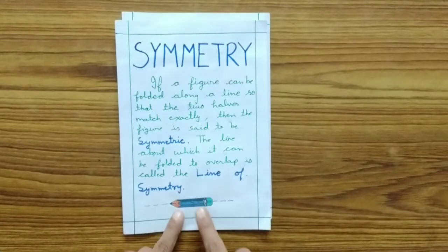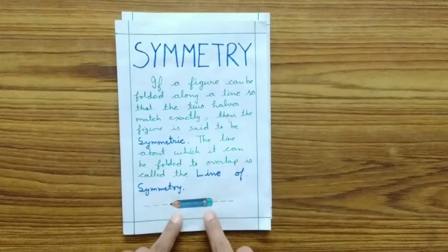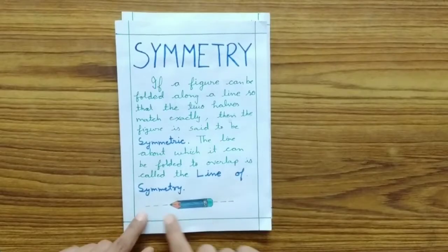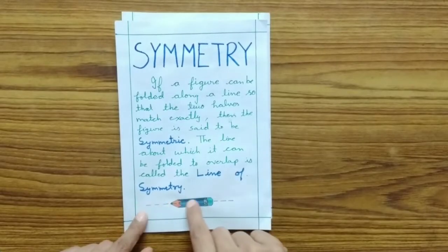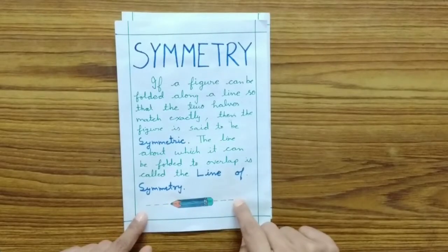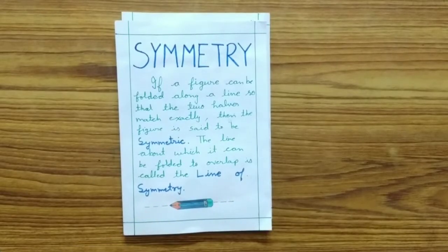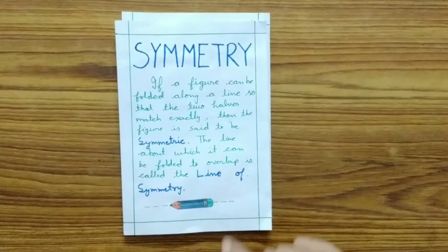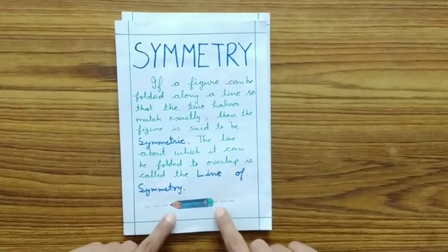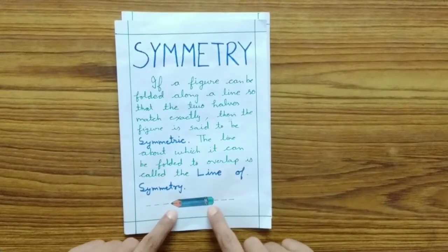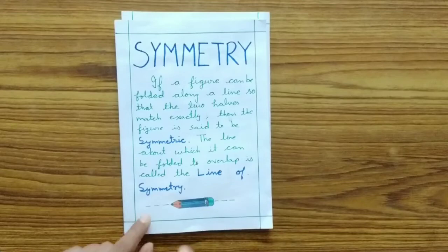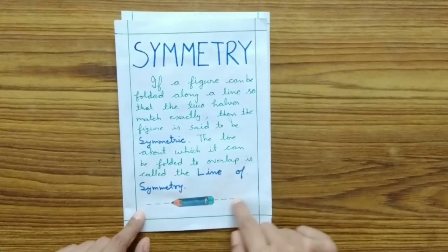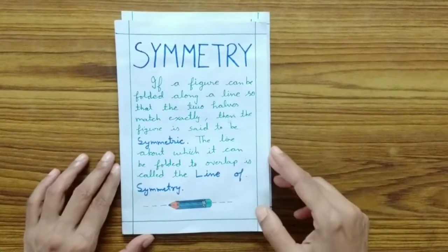For example, in this figure of a pencil, if we draw a line passing through the center and fold this figure about the center line, then both the halves will exactly match each other. So this figure is said to be symmetric and this central line is the line of symmetry.